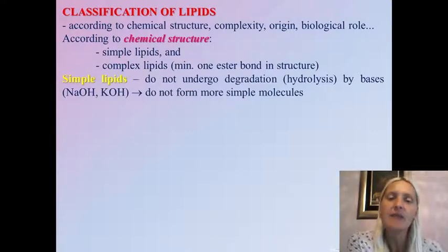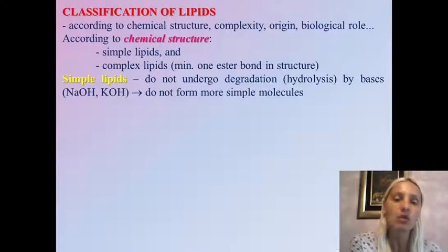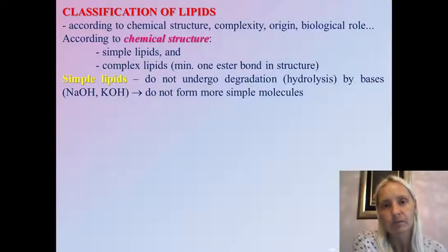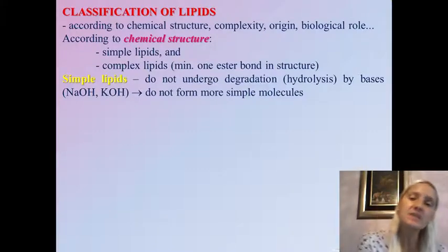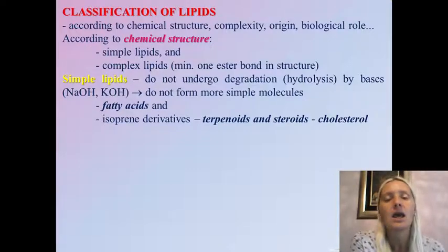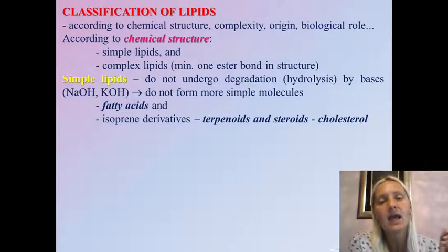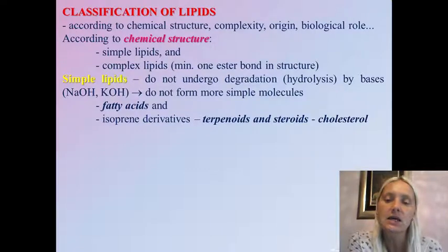Simple lipids — and the name says it for itself — are lipid molecules which do not undergo further degradation to something more simple. They do not undergo hydrolysis to form more simple molecules. That hydrolysis often occurs in alkaline medium from sodium or potassium hydroxide. In the group of simple lipids, we will mention fatty acids, isoprene derivatives — molecules which are marked as terpenoids — and steroid molecules, out of which we're going to focus on and explain in more detail the molecule of cholesterol.